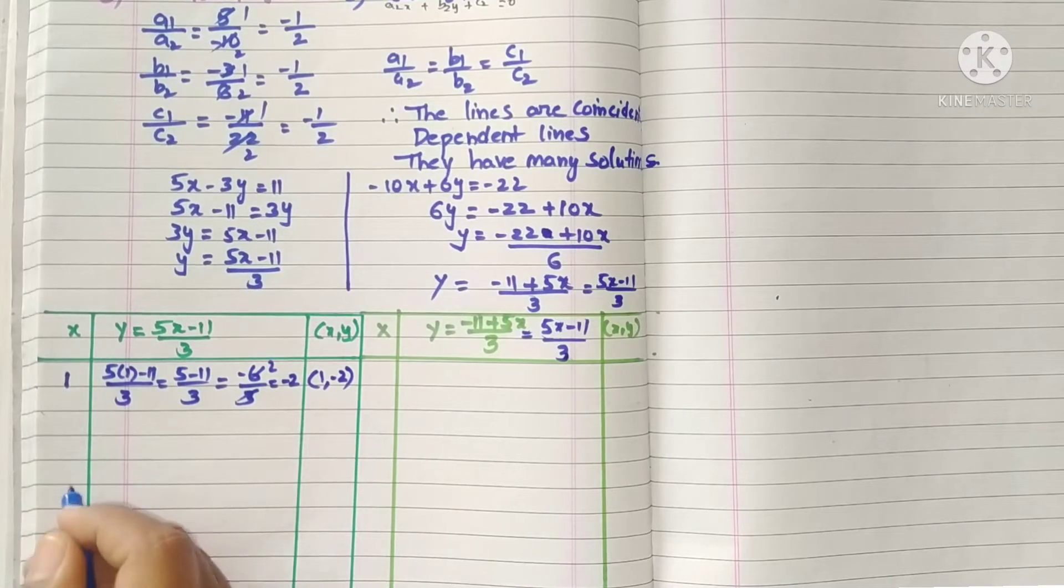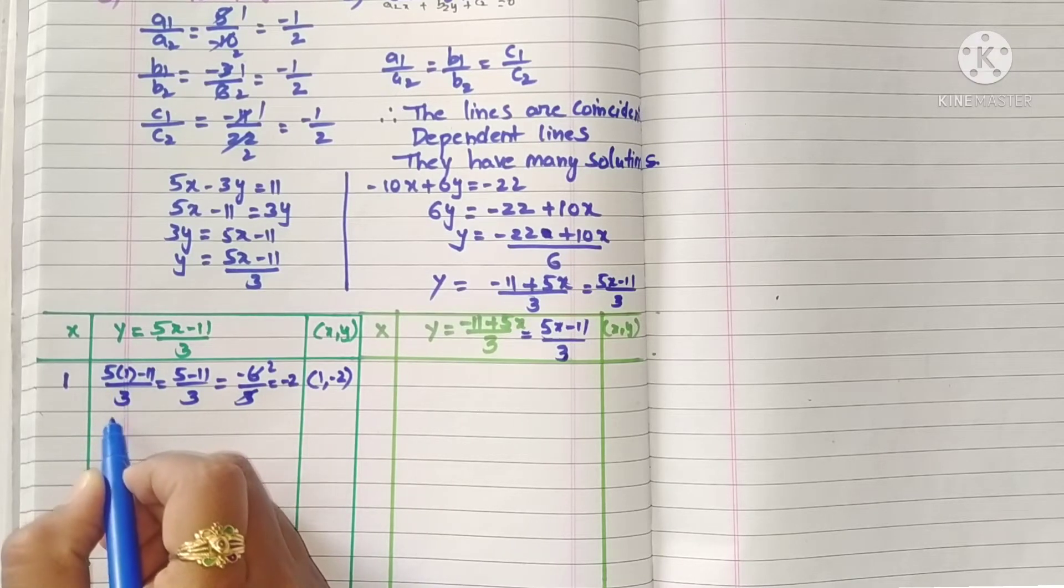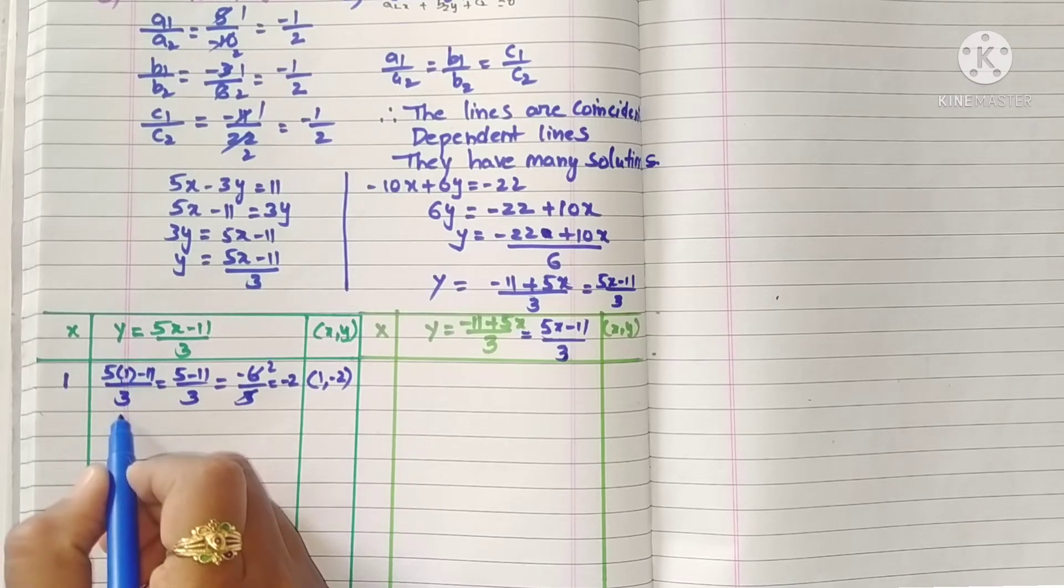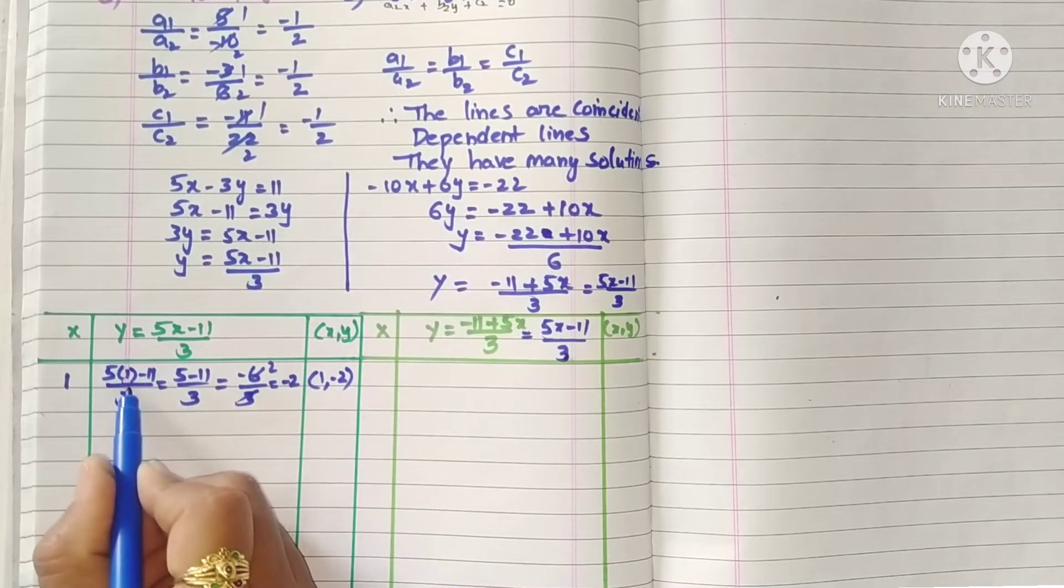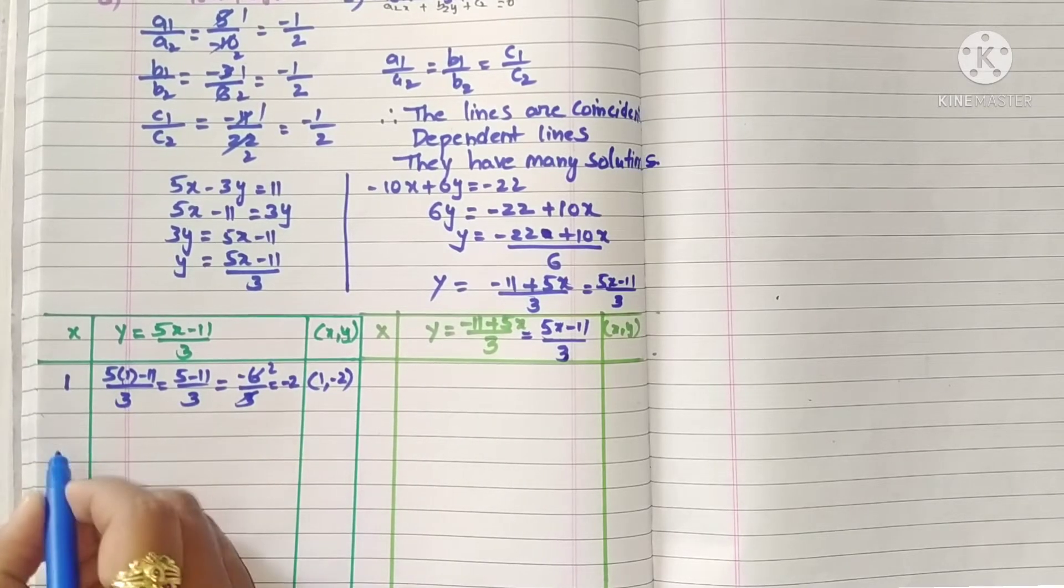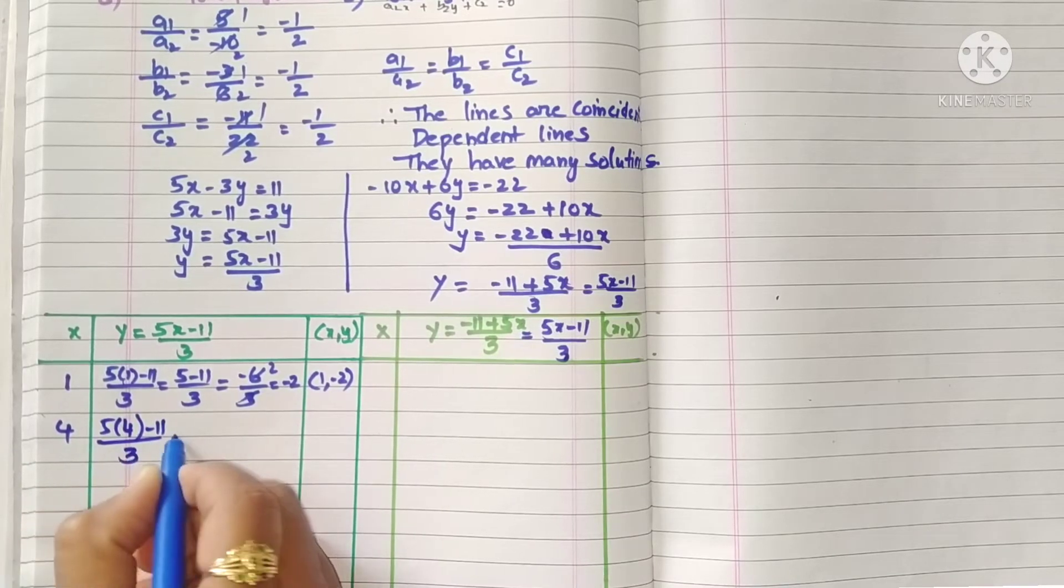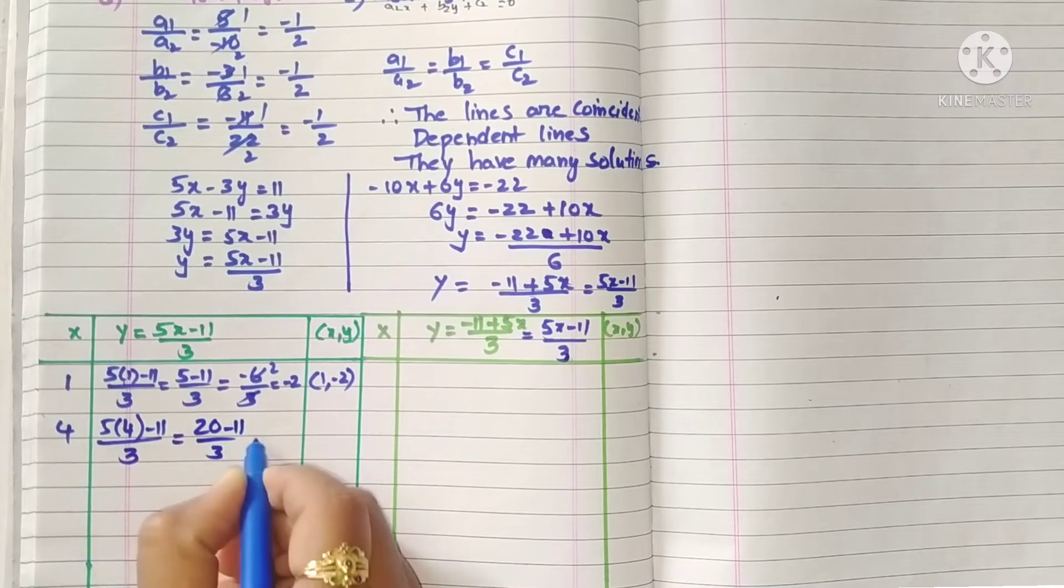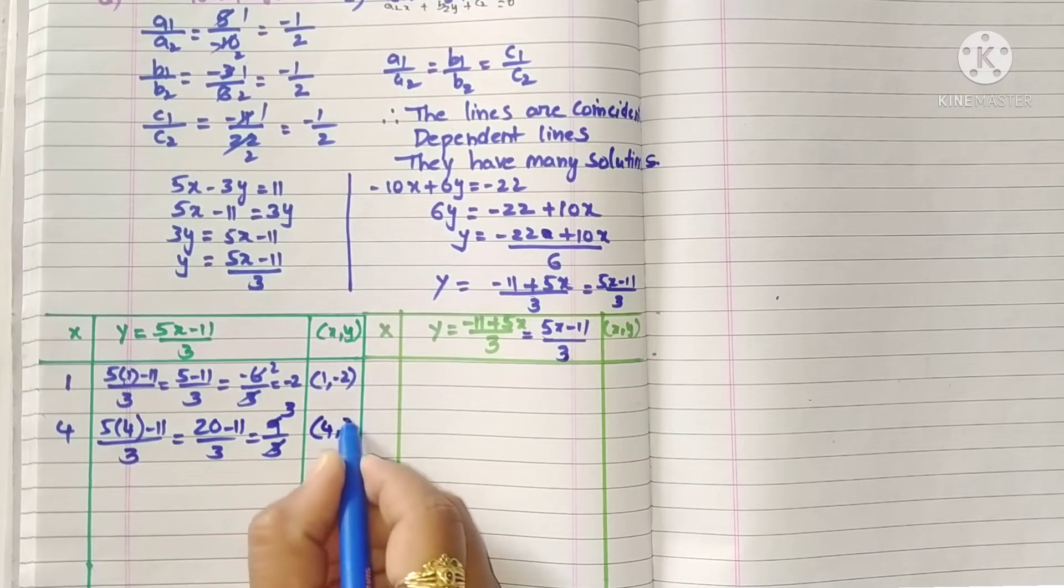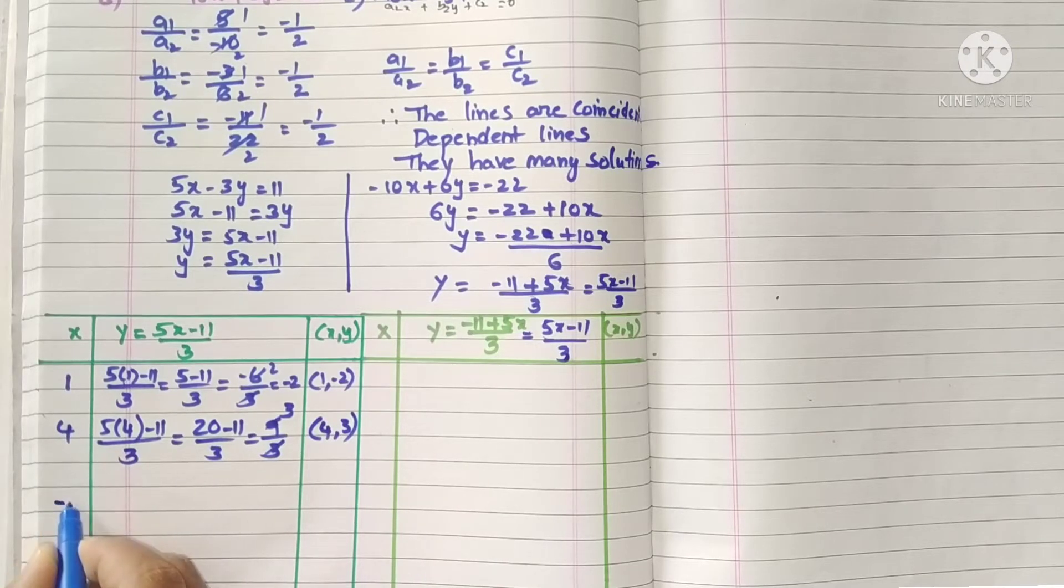Now we will take 4. 5 into 4 minus 11 by 3, that is 20 minus 11 by 3, which is 9 by 3. 3 into 3 is 9, so x value 4, y value 3.